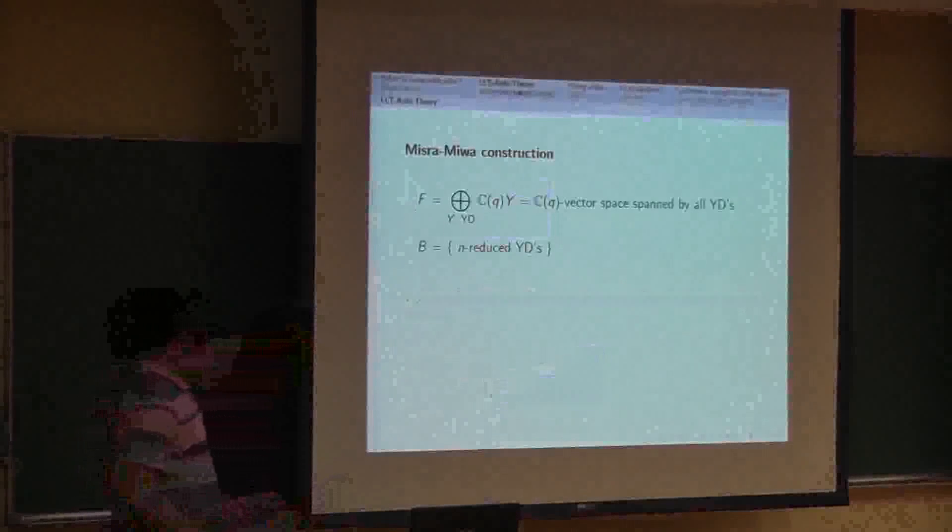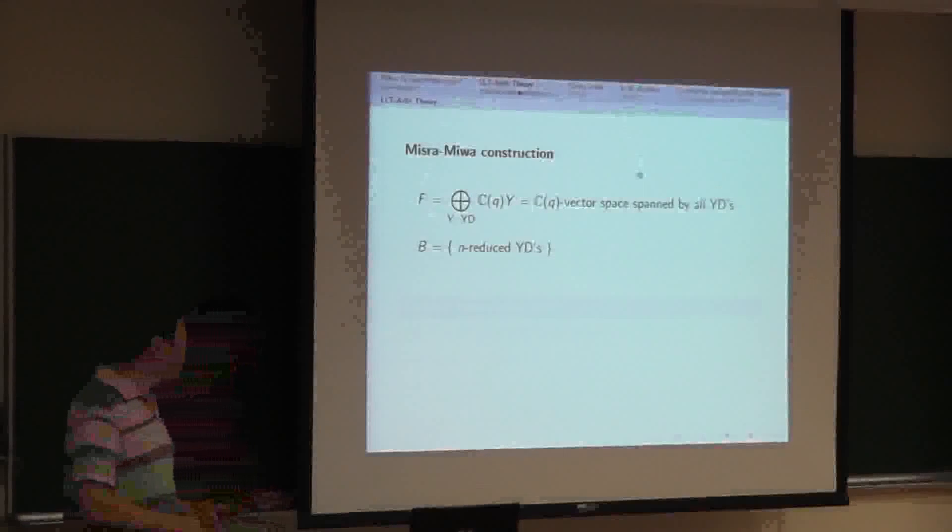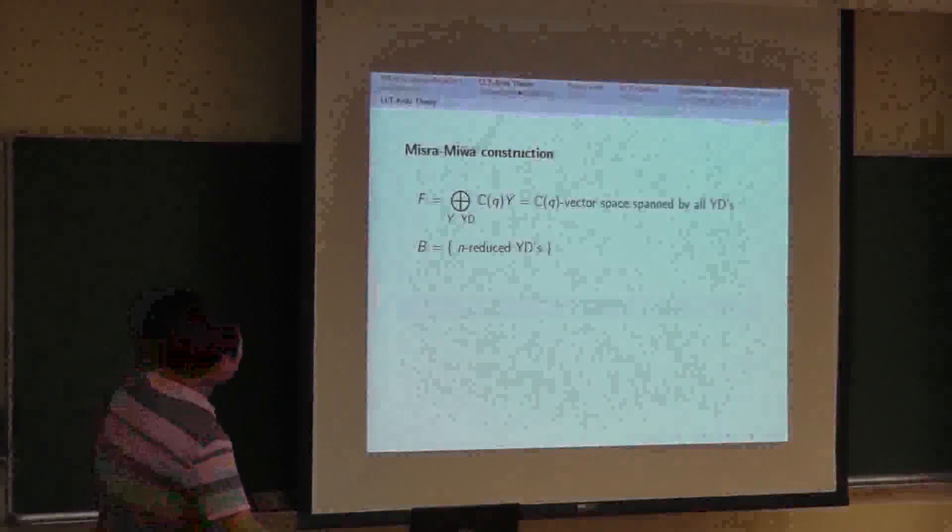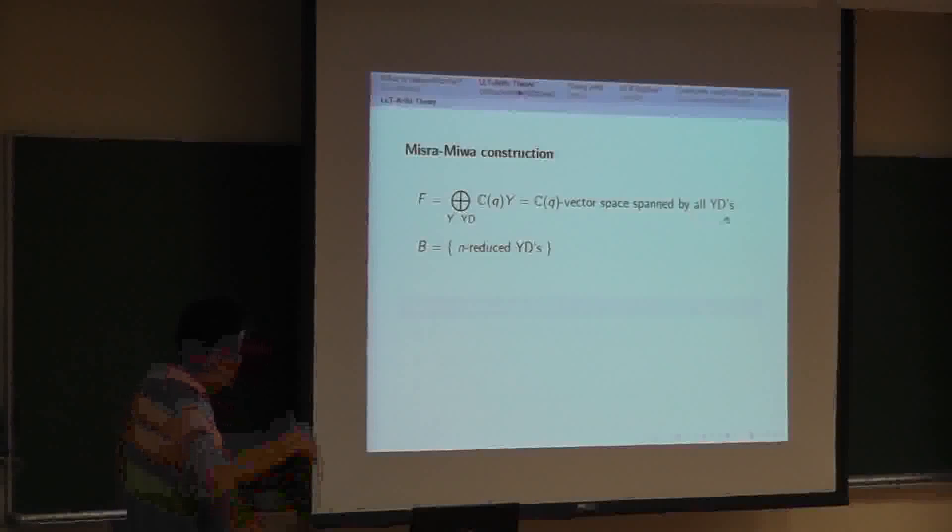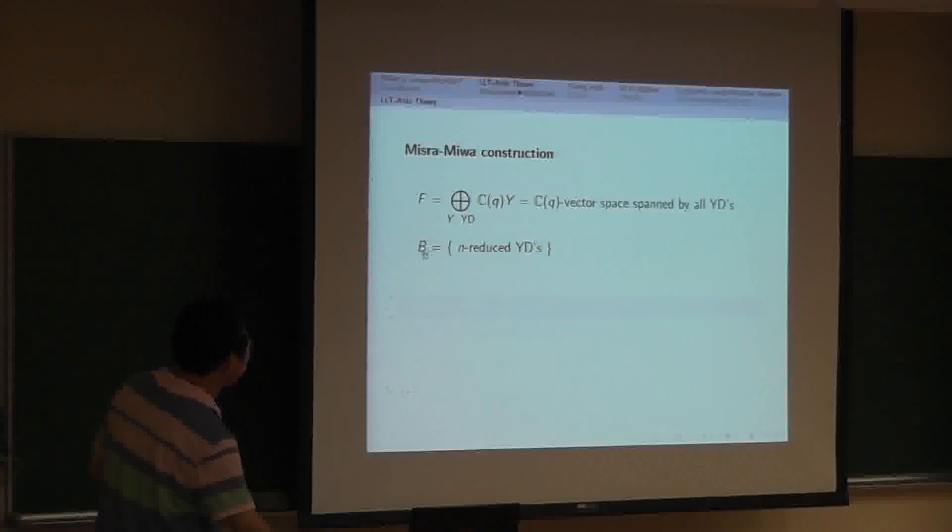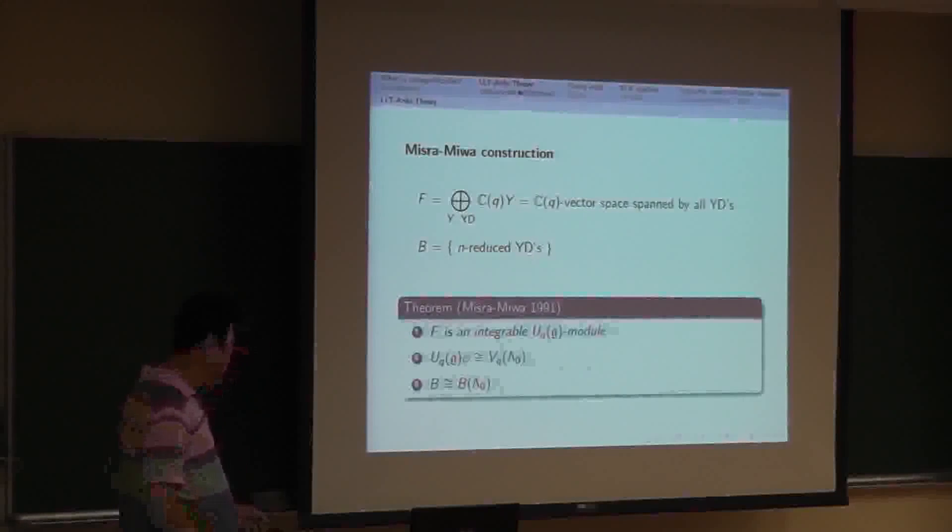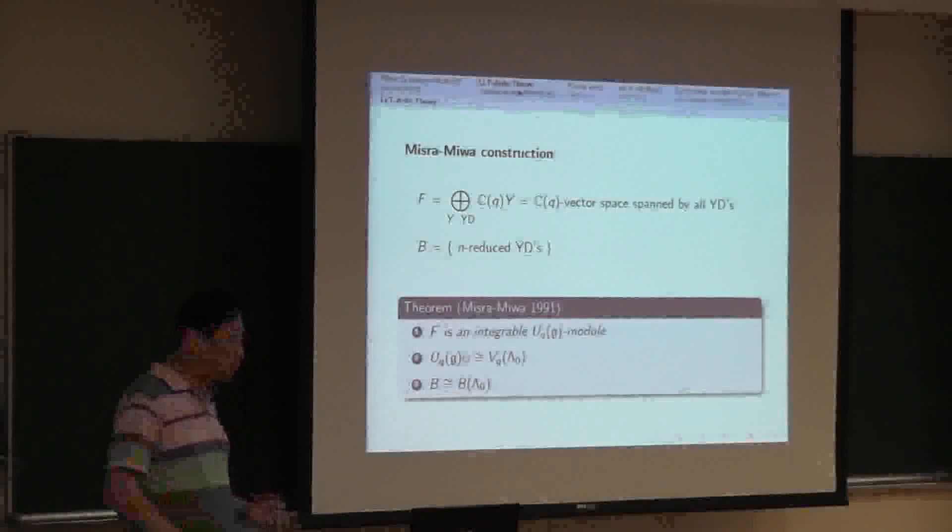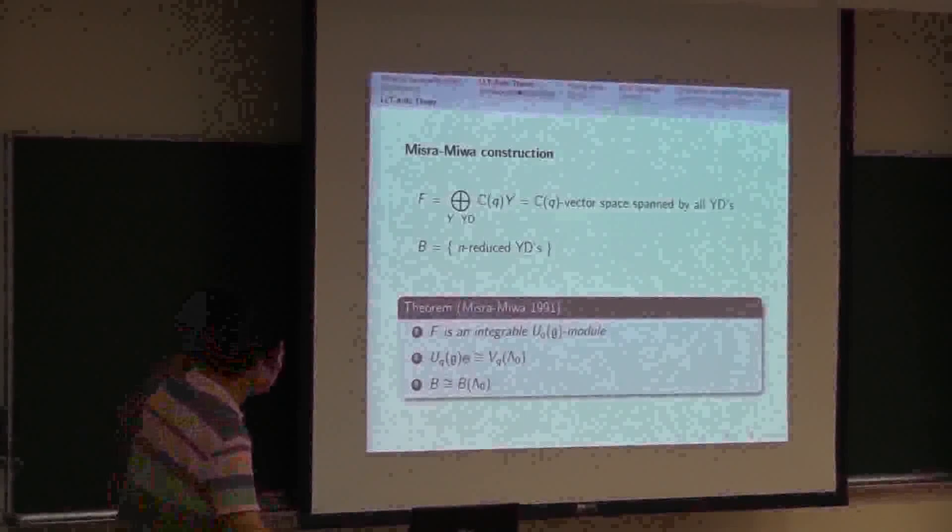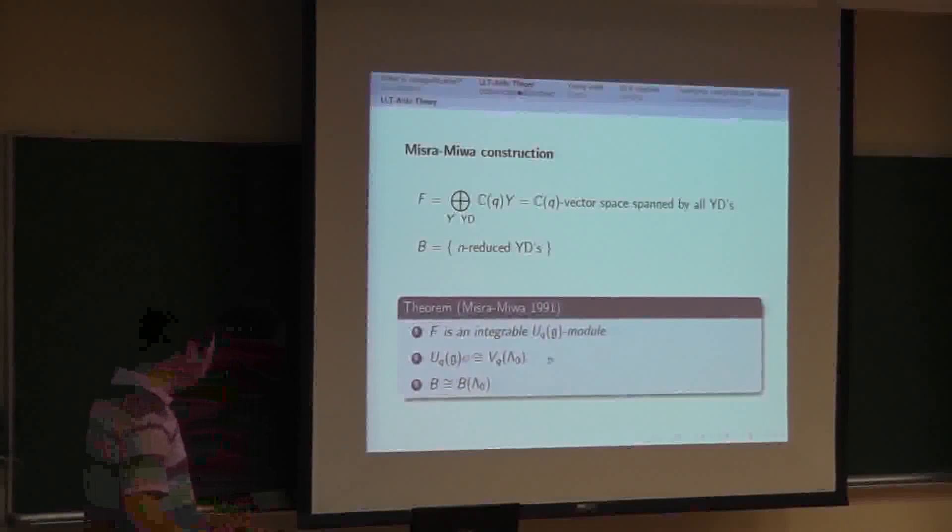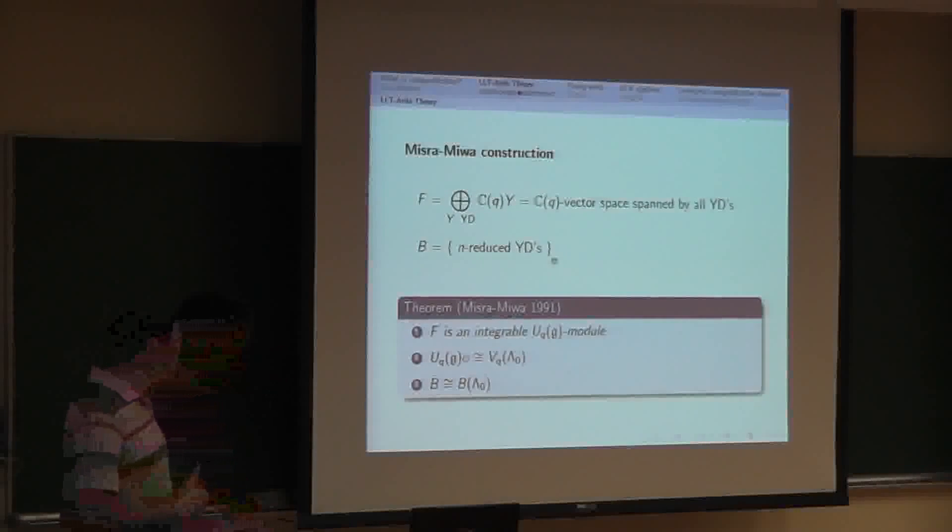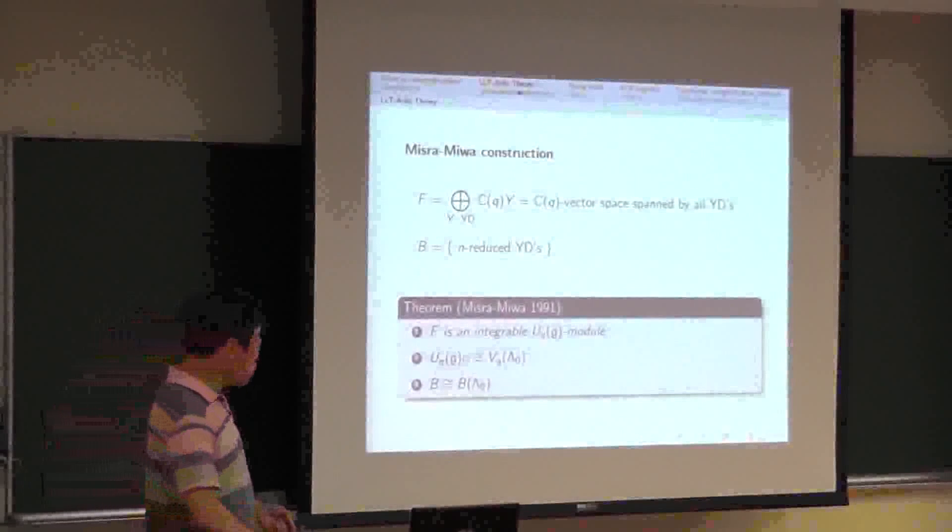Now let me speak, even though it's not standard. Suppose we have a Young diagram. A Young diagram is called n-reduced if the difference of adjacent columns are less than n. So the difference should be less than n. Sorry, but I can use the mouse.